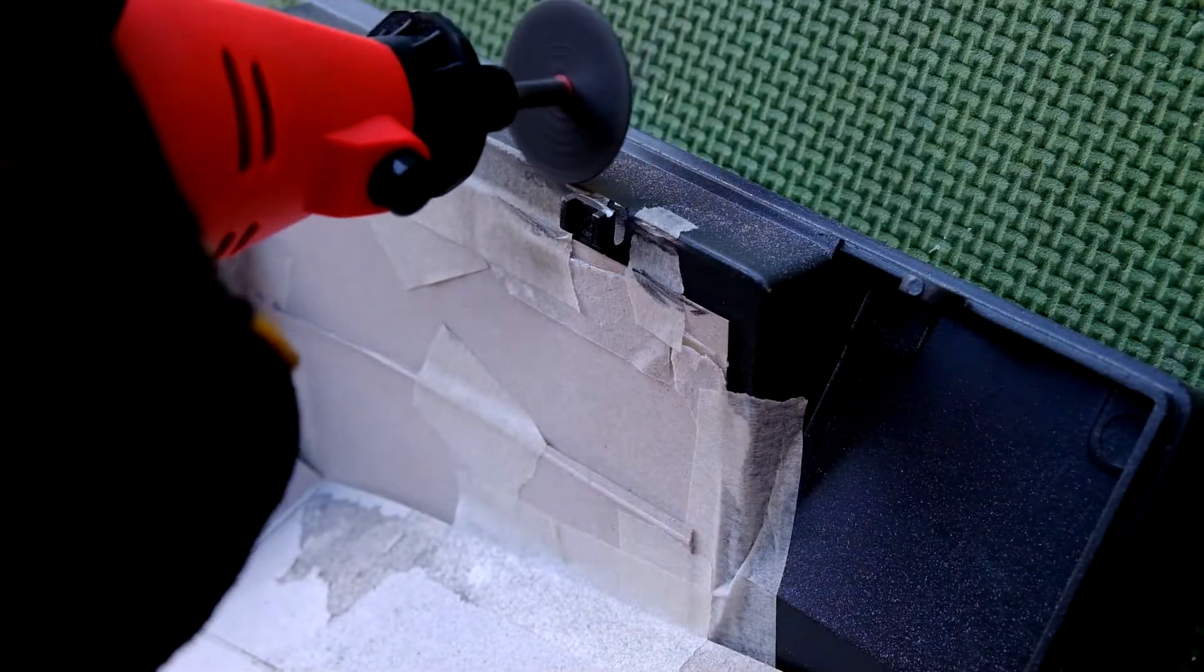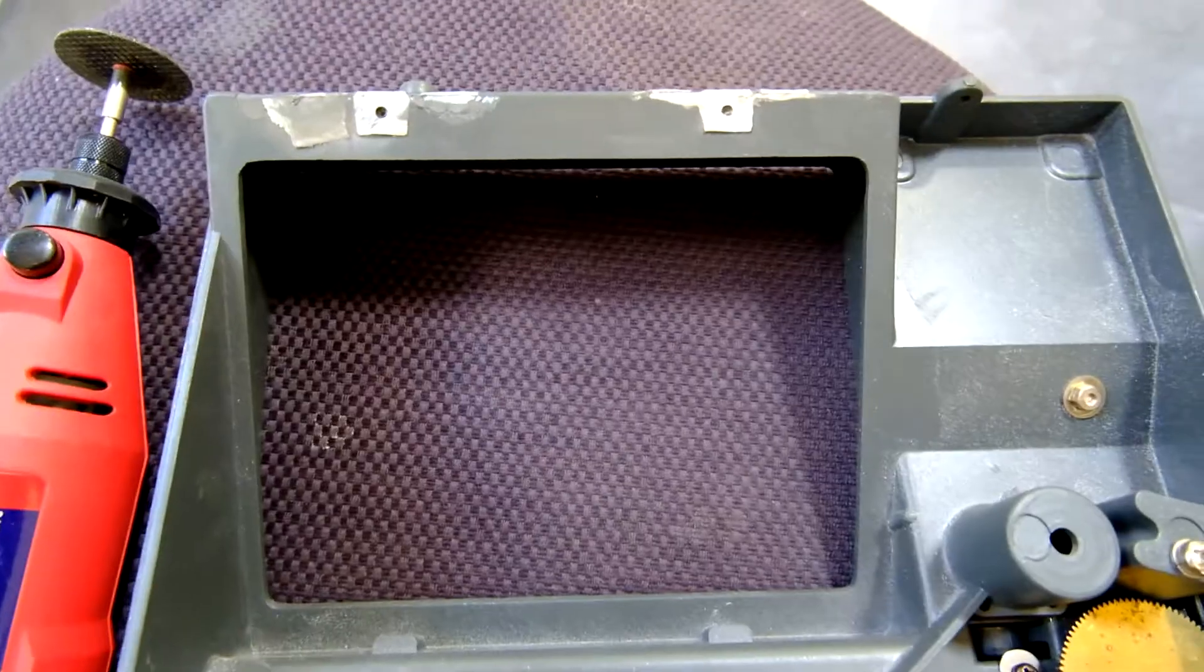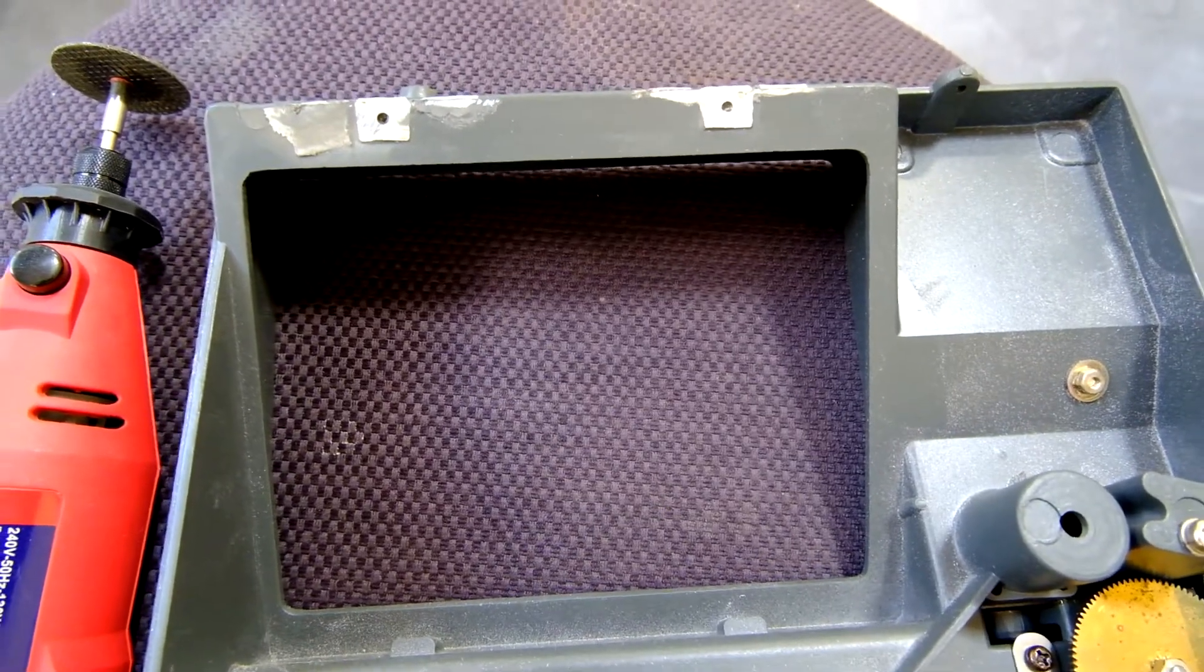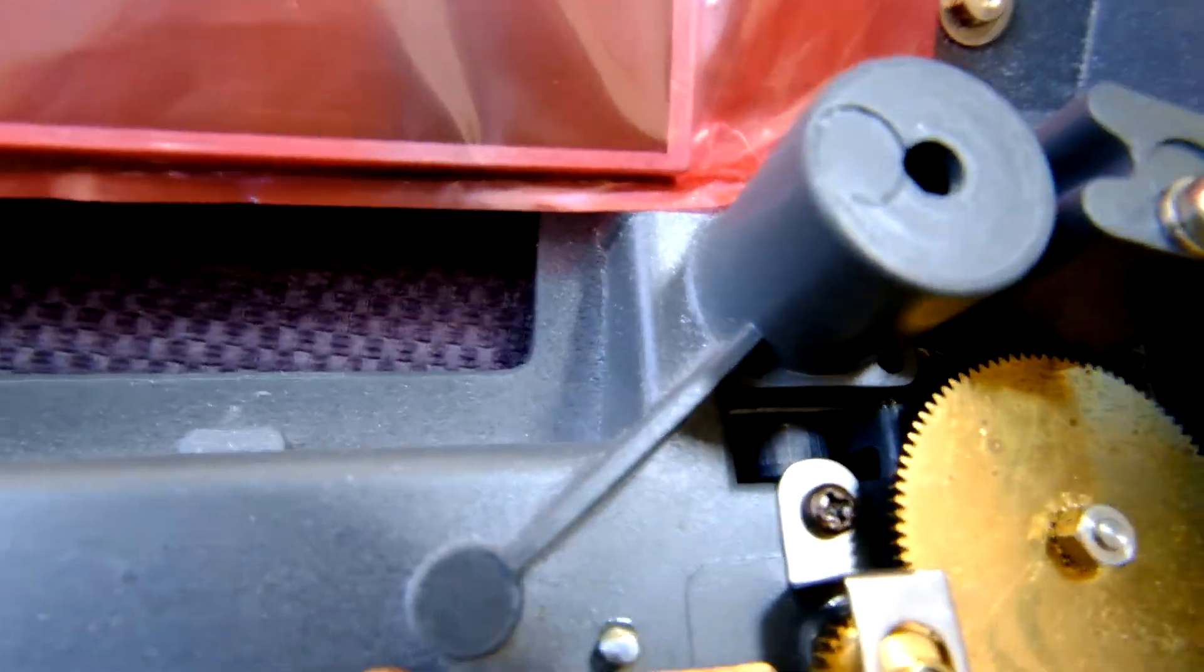We'll use a rotary cutting tool to remove these little stubs here. Now that those are gone, we need to think about fitting the screen. The screen is a bit too wide, so we need to look at this bit down here and make some cuts into that piece of metal.